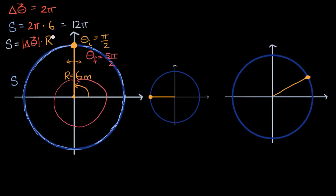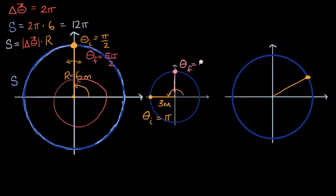Let's see if that is always true. In this situation, I have a ball on a shorter string — only three meters. Its initial angle, theta initial, is pi radians as measured from the positive x-axis. We rotate it clockwise, so theta final equals pi over two radians.